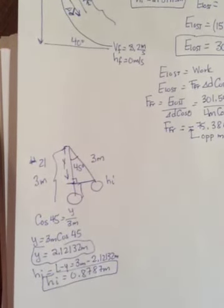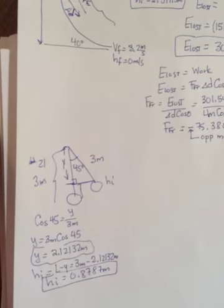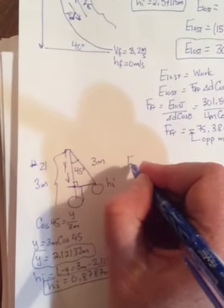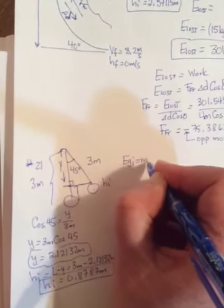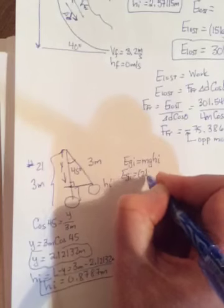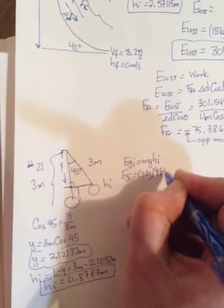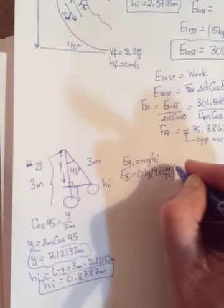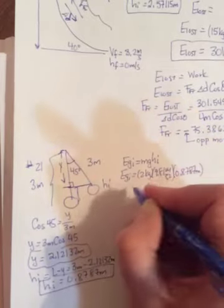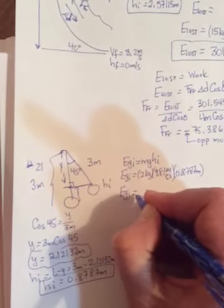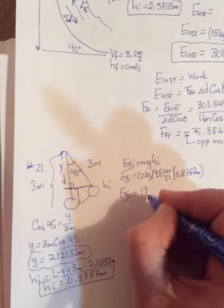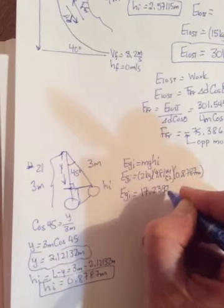Alright? So the first part of the question then, once you've done all that, says calculate the gravitational potential energy of the pendulum relative to its rest position. In other words, find EG initial, which will be mghI. It tells us in the question the m is 2 kilograms, g is 9.81 meters per second squared, and we just found the HI 0.8787, etc. meters. So the gravitational potential energy up here at the top of its swing should end up being 17.2397 joules.